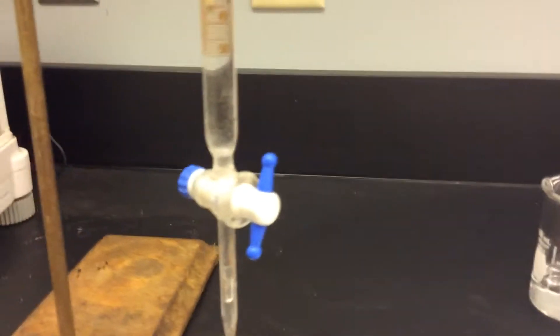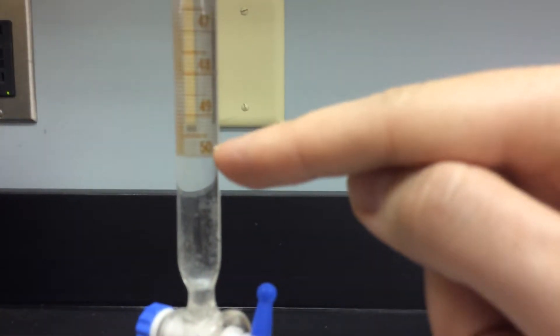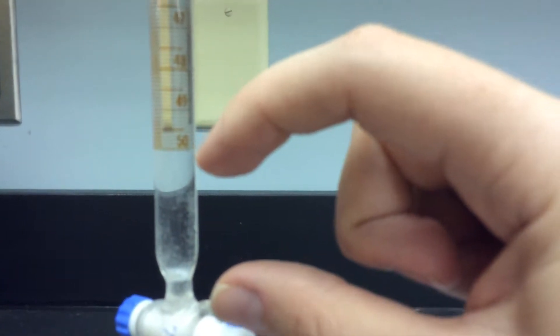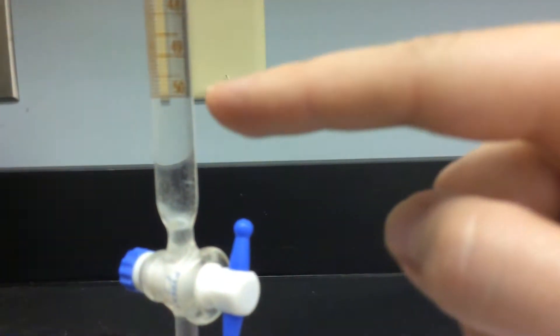Now when you're using a burette, one of the important things to remember is that you need to stop it when the meniscus reaches this line right here. Because otherwise you'll dispense this volume right here, which you have no idea what it is. So you're actually dispensing way more than you expect if you go all the way out. You want to stop the draining right there.